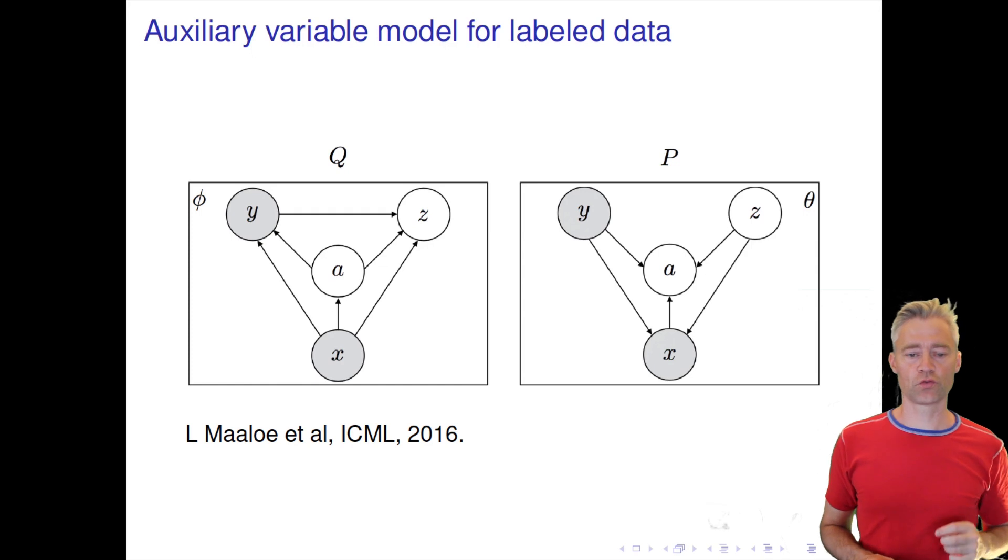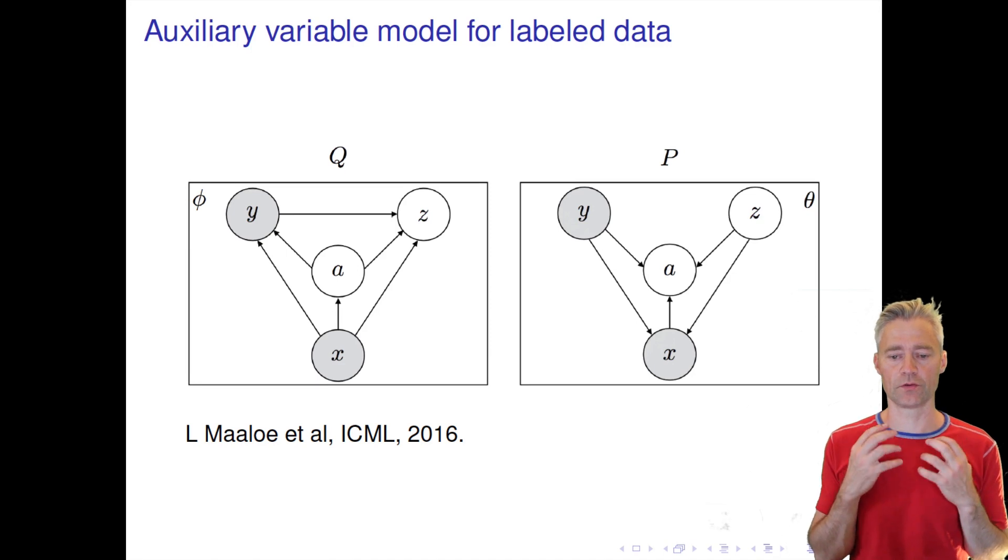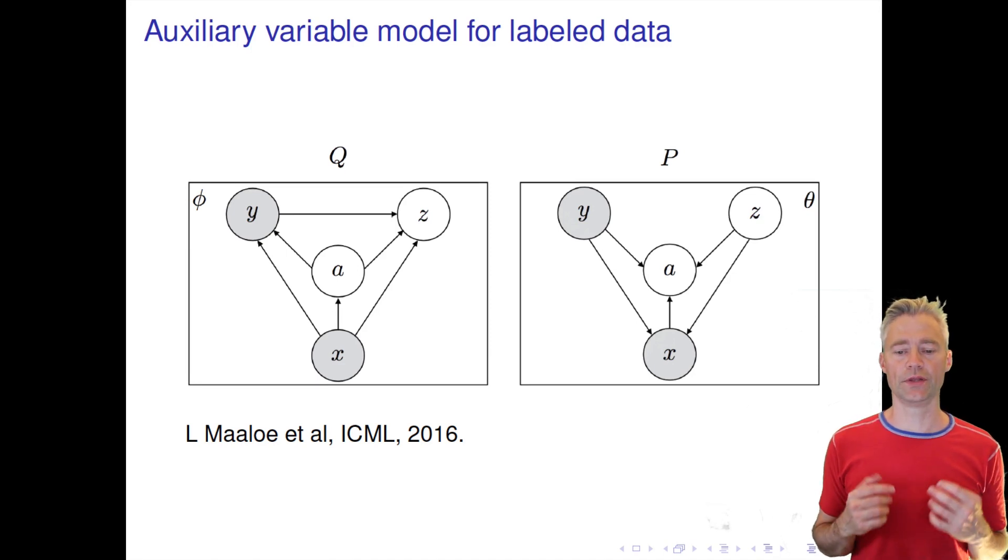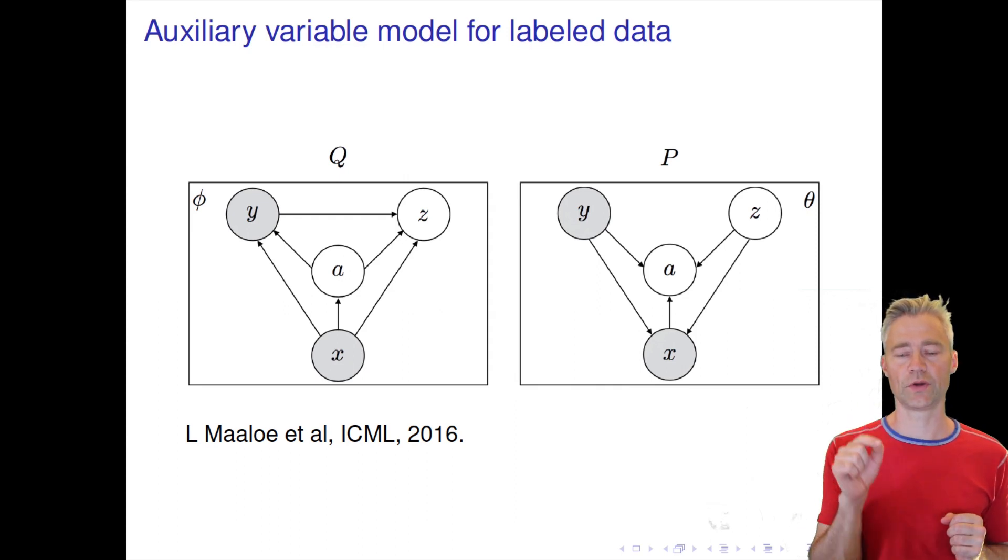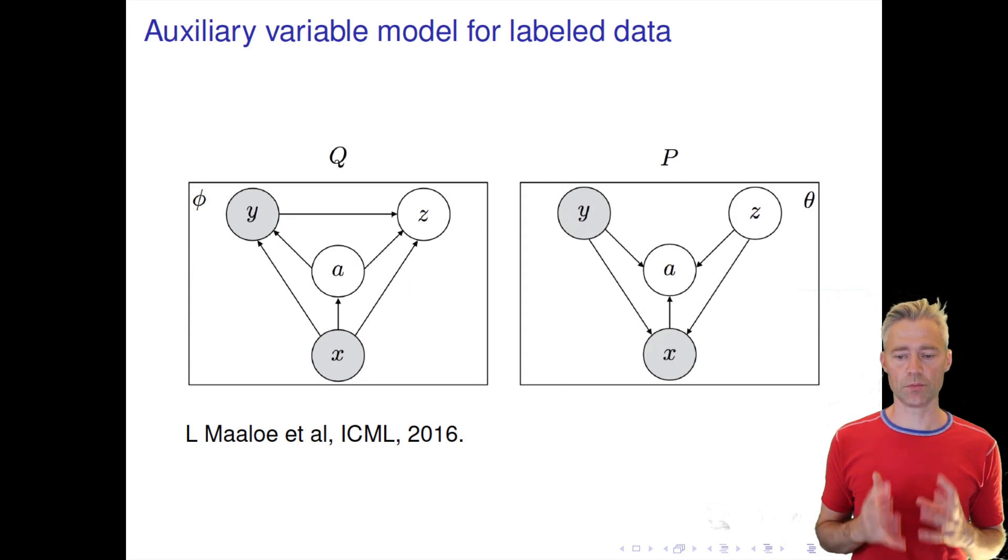In order to use our generative approach from before for this supervised and semi-supervised case, we need to expand our model to also include a label. So forget about this A thing here - this is the auxiliary variable I mentioned before, and you can read more about that in our ICML paper. Just think about the Y, X, and C variables. If you look at our generative model first, you can see we now have an expanded model where we say in order to generate an image, for example an MNIST image, we decide on C.